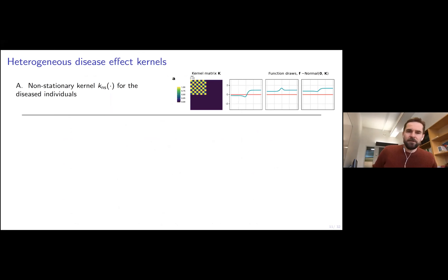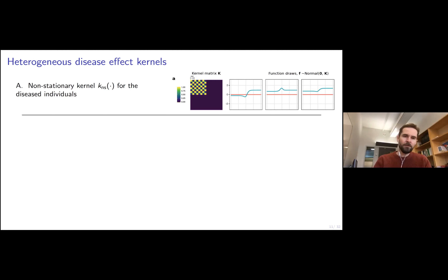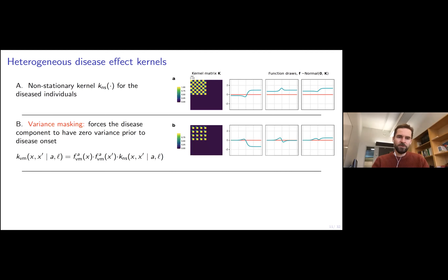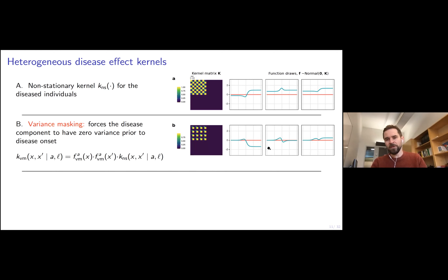Disease effects are typically assumed to correspond to relatively rapid changes happening around the time of disease onset, and are best modeled using non-stationary kernels. We propose using a variance masking kernel which forces the disease component to have zero variance prior to disease onset. The covariance matrix and realizations are shown here, with the hypothetical disease onset in the middle of the time axis. This is obtained by a simple product between the non-stationary kernels and the variance masking kernel.